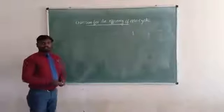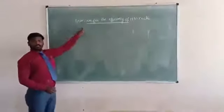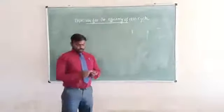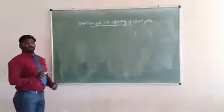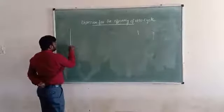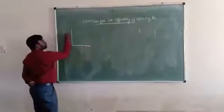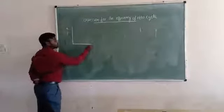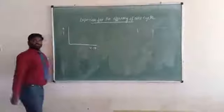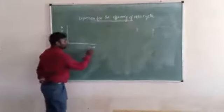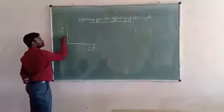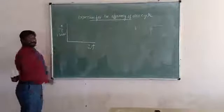Hello friends, today I am going to explain about the expression for efficiency of the Otto cycle. For this we need to draw the PV and TS diagram. This is pressure on the Y-axis and volume on the X-axis. Volume units are in cubic meters and pressure will be taken as bar.